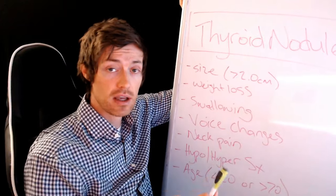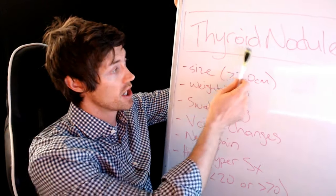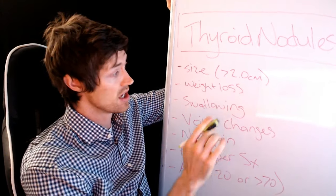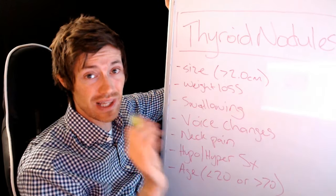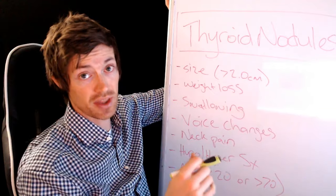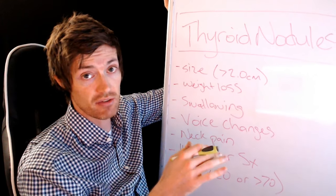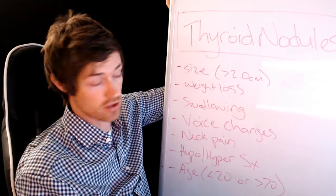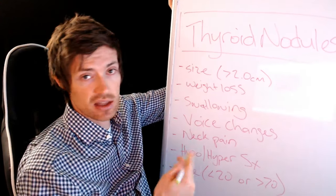These are signs that you would want to look for that if present may indicate that your thyroid nodule is something more than just a benign nodule. Now again, remember before we get into this, only about five percent or less of thyroid nodules are cancerous. So that means there's a 95 percent chance right off the bat that yours is just a benign nodule and it's not going to be cancerous. But these signs indicate that it might be a higher likelihood.